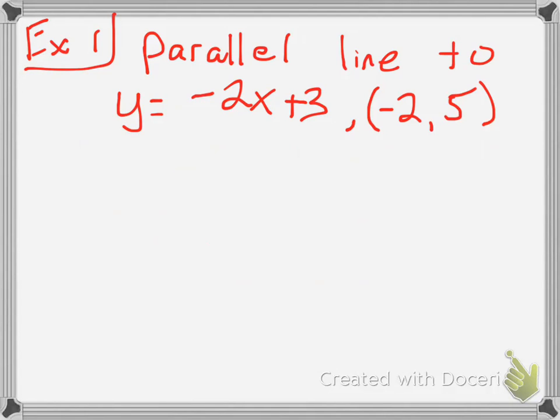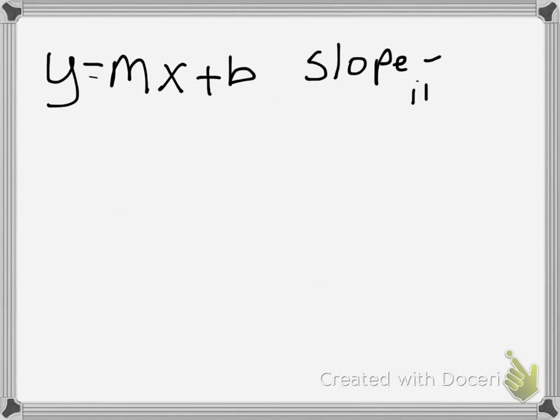The thing about it is, you need to go back and remember stuff like this. So, y equals mx plus b. That is the slope intercept form of a line.